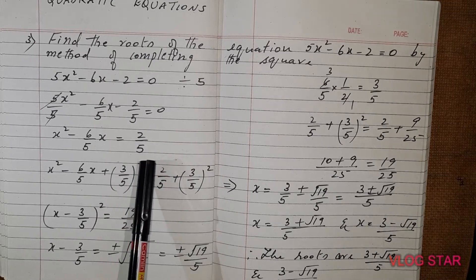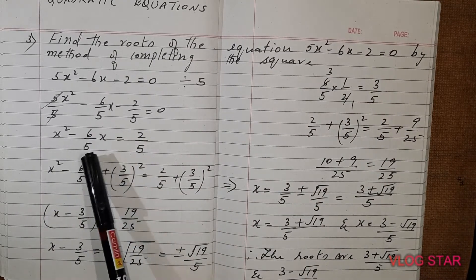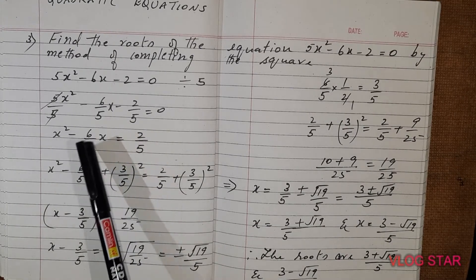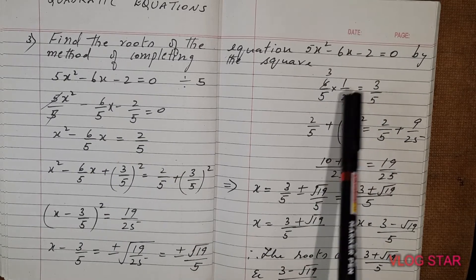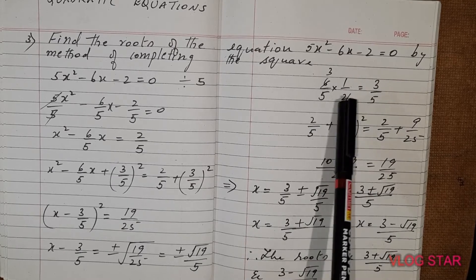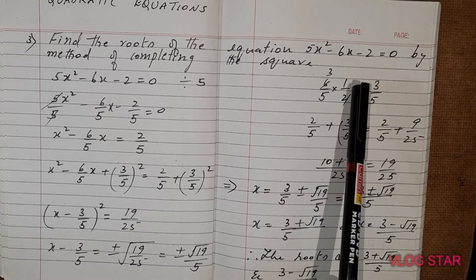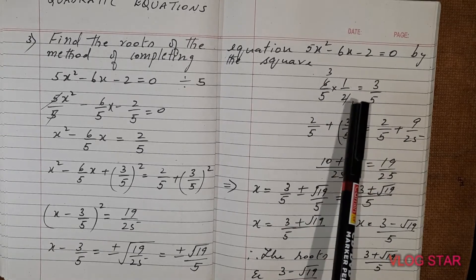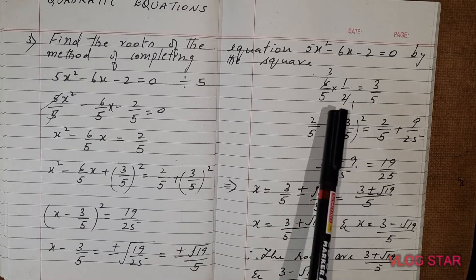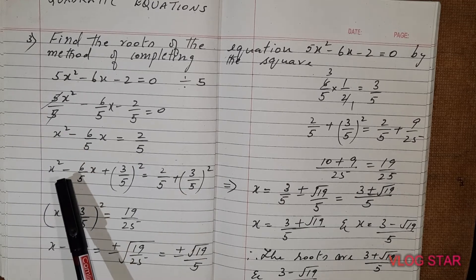This -2/5 will go to the right side and it will become +2/5. Now take the half of the coefficient of x. The coefficient of x is 6/5, so 6/5 multiplied by half: you can cancel here — 2 ones are 2, threes — so this gives 3 divided by 5, that is 3/5.